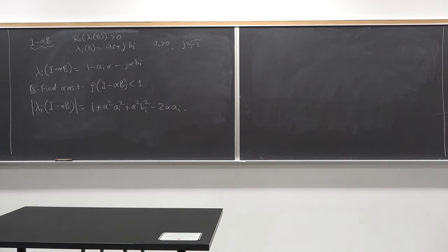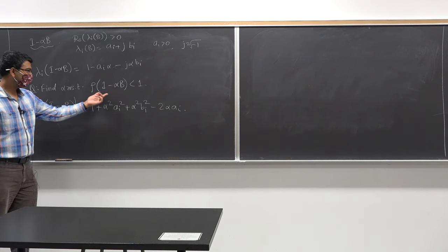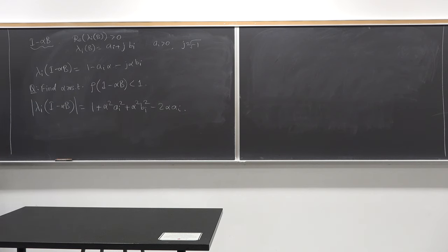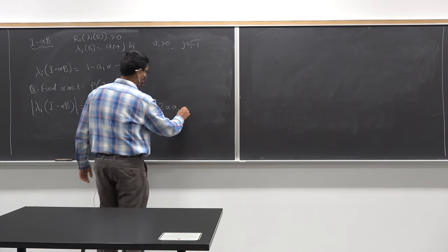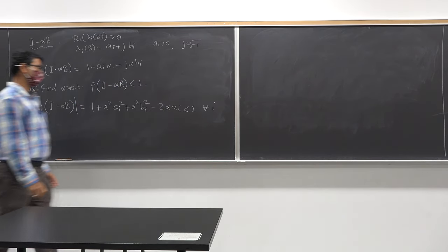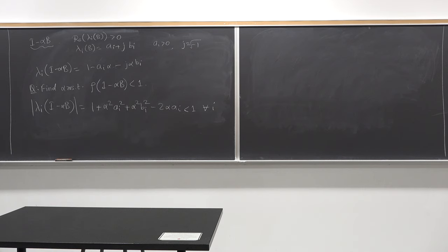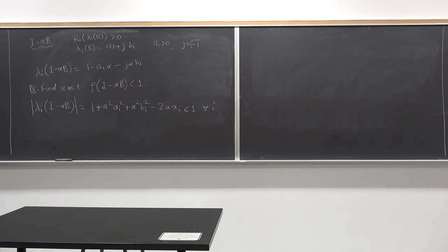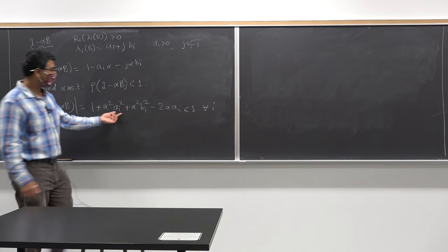The question is how should we proceed. I want the absolute value of lambda_i to be less than one for all i — that's when the spectral radius will be less than one. How should I find the value of alpha greater than zero such that that holds? One suggestion is to minimize, which is a reasonable but complicated solution since you have i such values.